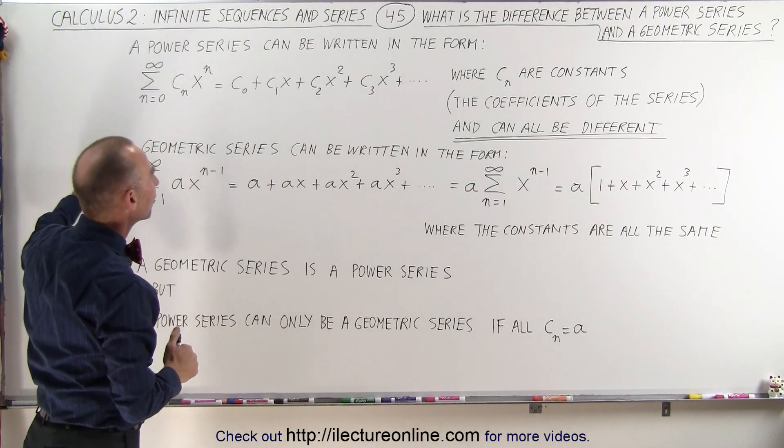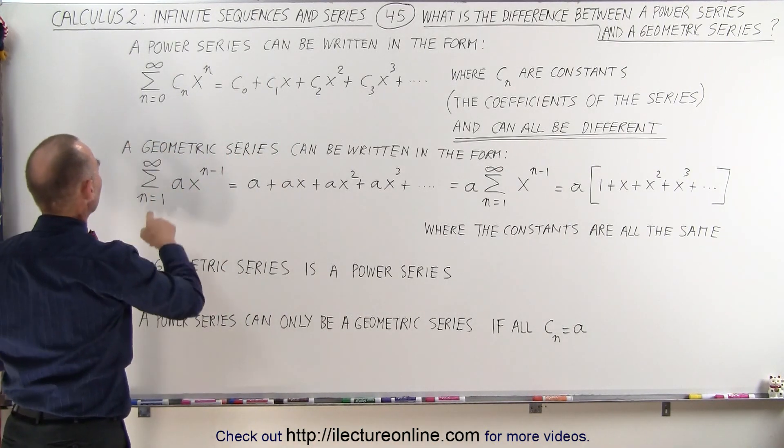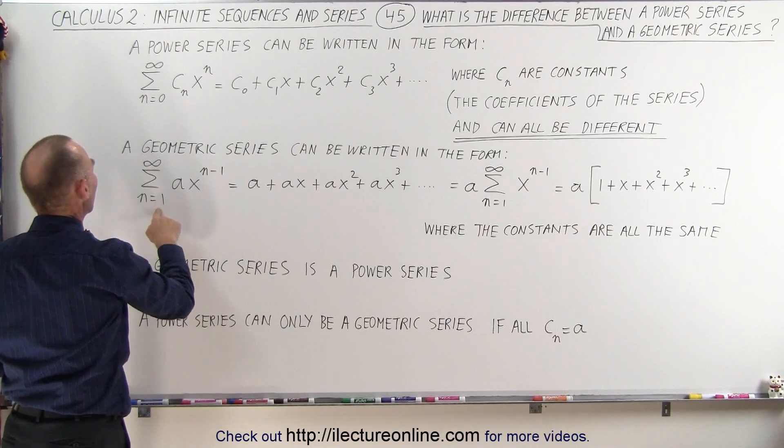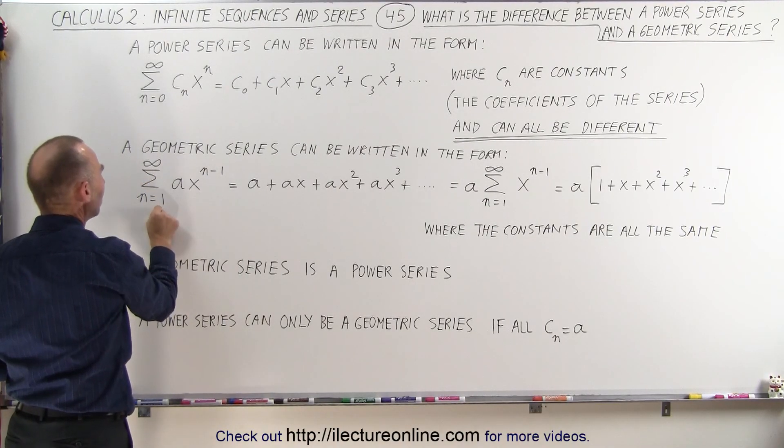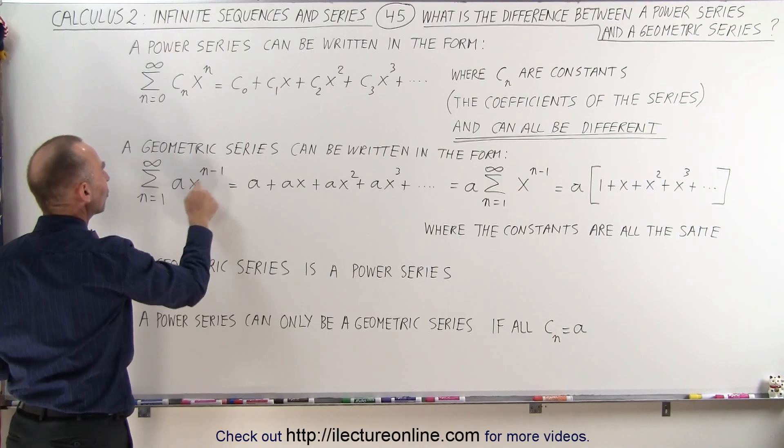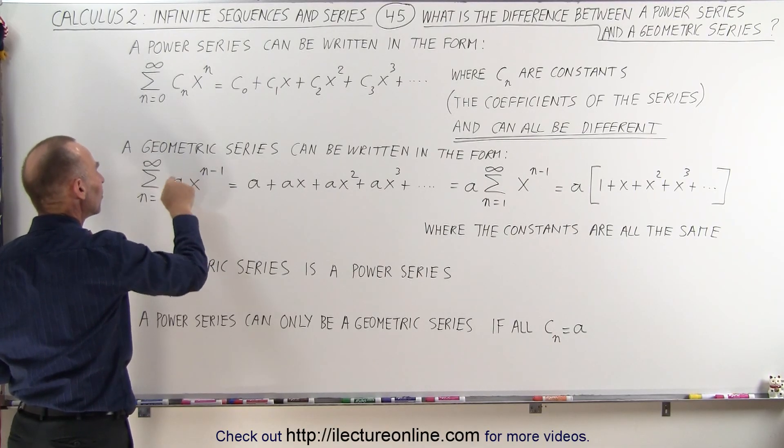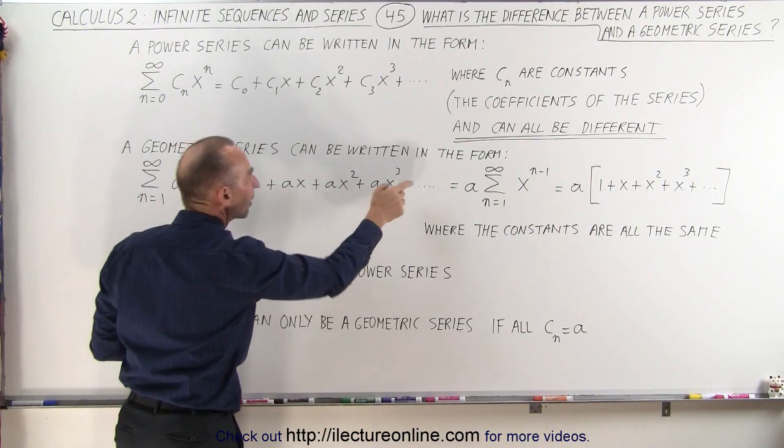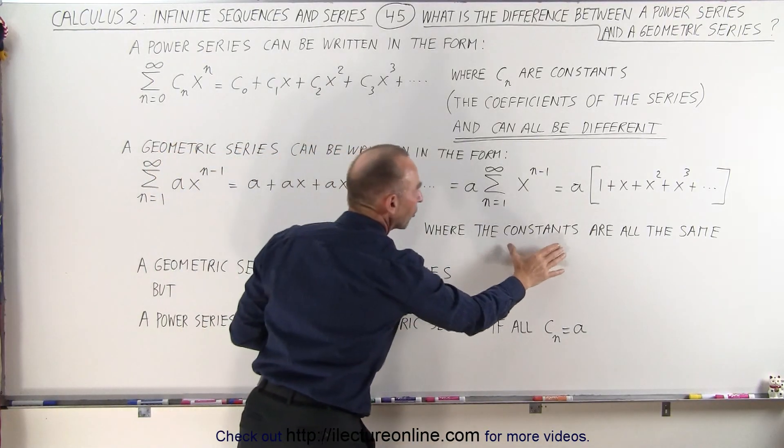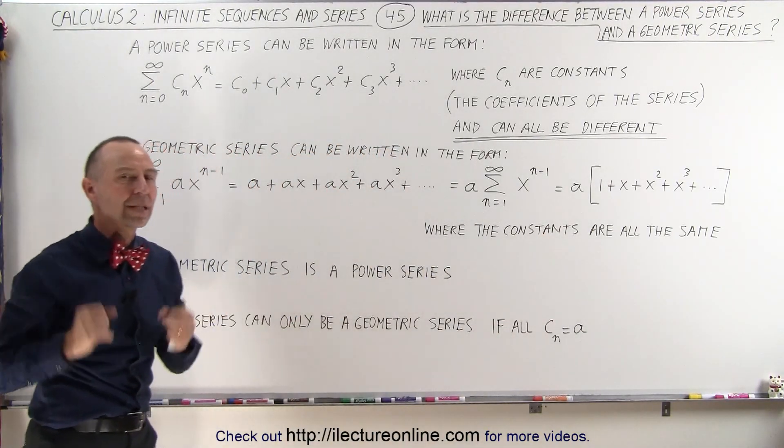A geometric series can be written in the form, and notice the difference. It's an infinite sum from n equals 1 to infinity, so we start at 1 because here we have x to the n minus 1, but the constant in front of every term is the very same constant. All the constants are the same, and that is the big difference.